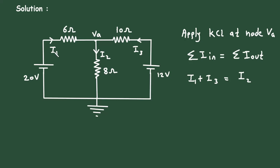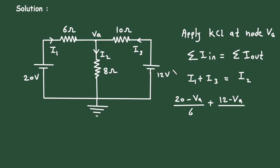Now I1 in voltage form is higher voltage minus lower voltage divided by resistance, that is 20 minus VA divided by 6. Then plus I3, which will be 12 minus VA divided by 10, and this is equal to I2, which is VA minus 0 divided by 8.